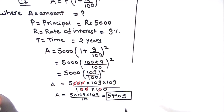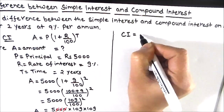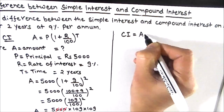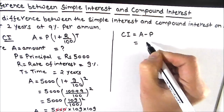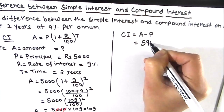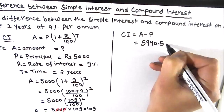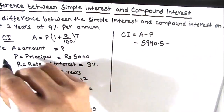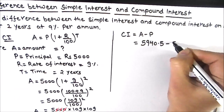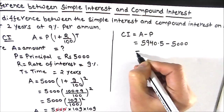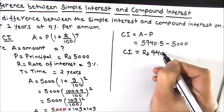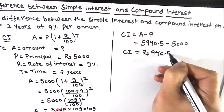Now we are going to use this amount to find the compound interest. Compound interest equals amount minus principal: 5940.50 minus 5000. So compound interest is rupees 940.50.